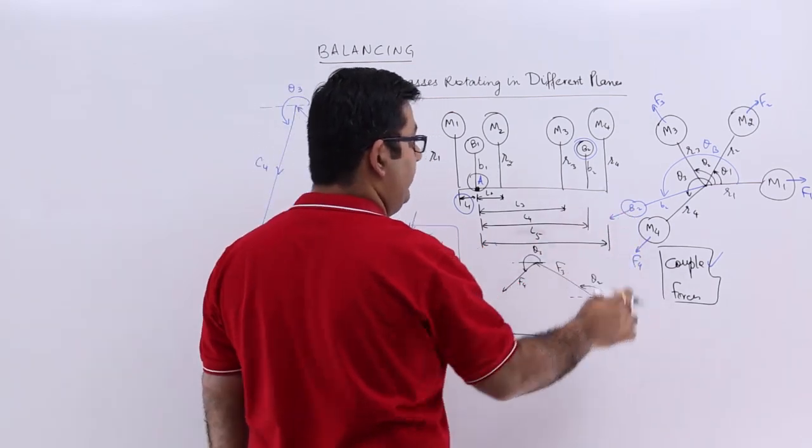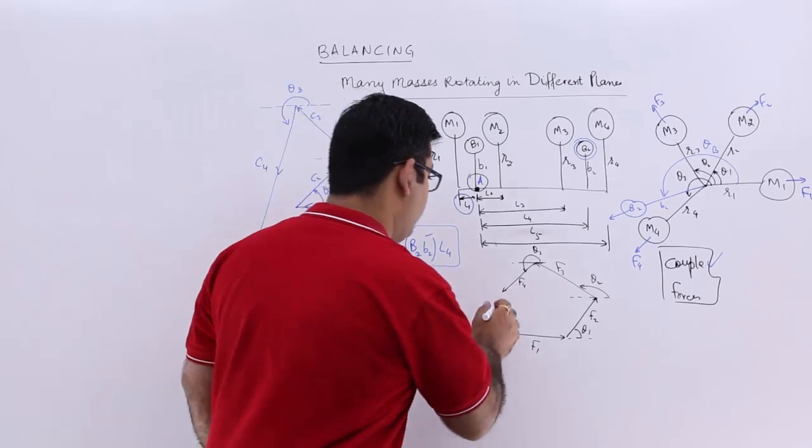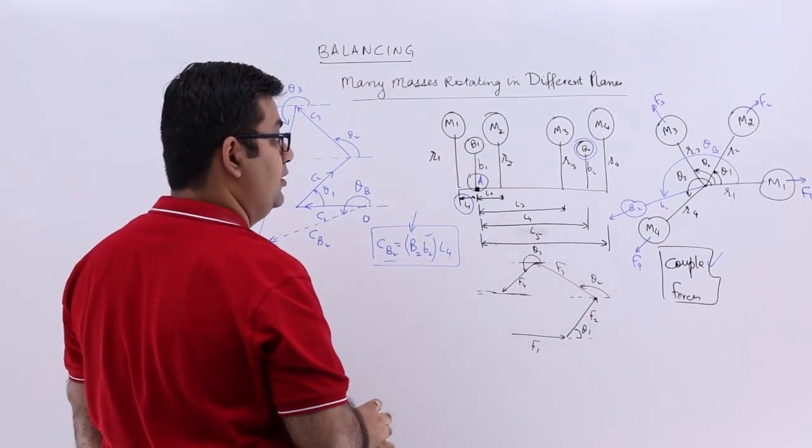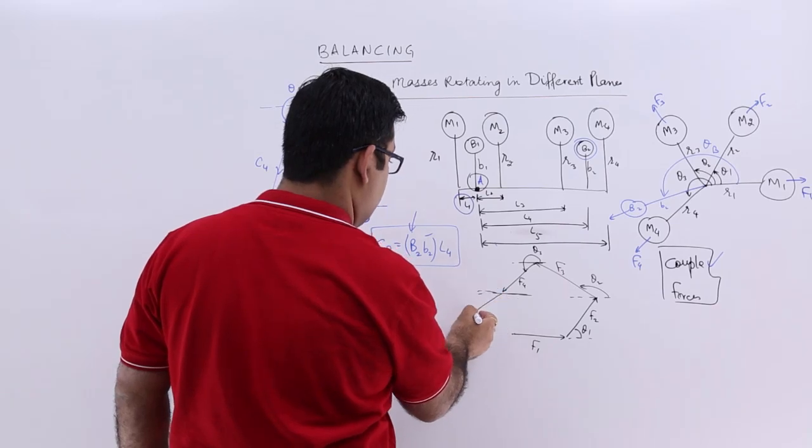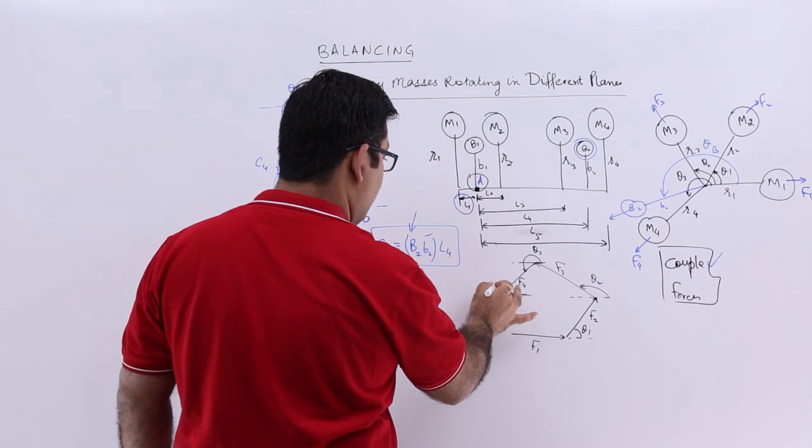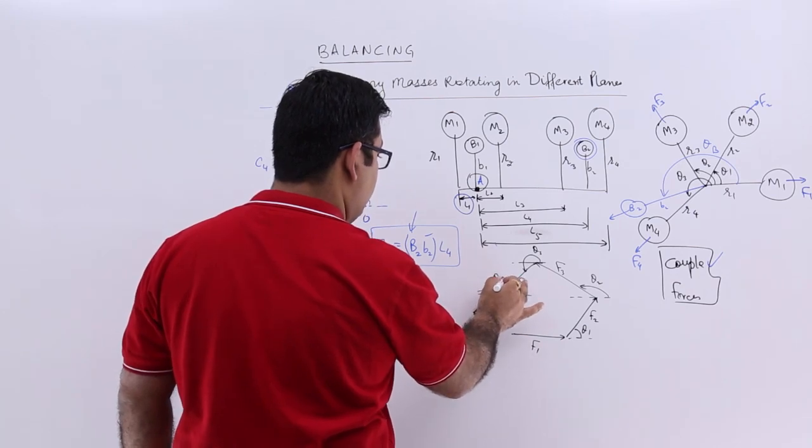And then we draw this B2. So this would be like this. This is FB2. And the angle is theta B.